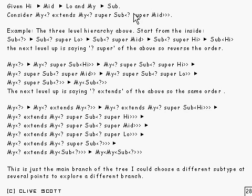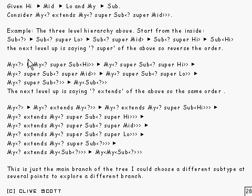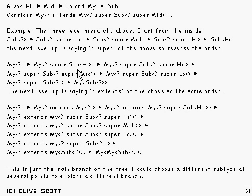The next level up is saying 'my of something which is super' that. What you've got to do, because it's 'super', is reverse the order of all of that, and put 'my of something which is super' in front of it. But before you do that, don't forget that there's an extra type — 'my of something' — which is quite a general form. So we've put 'my of something which is super sub high', which is that one there. The next one will be 'my of something which is super sub' of all that.